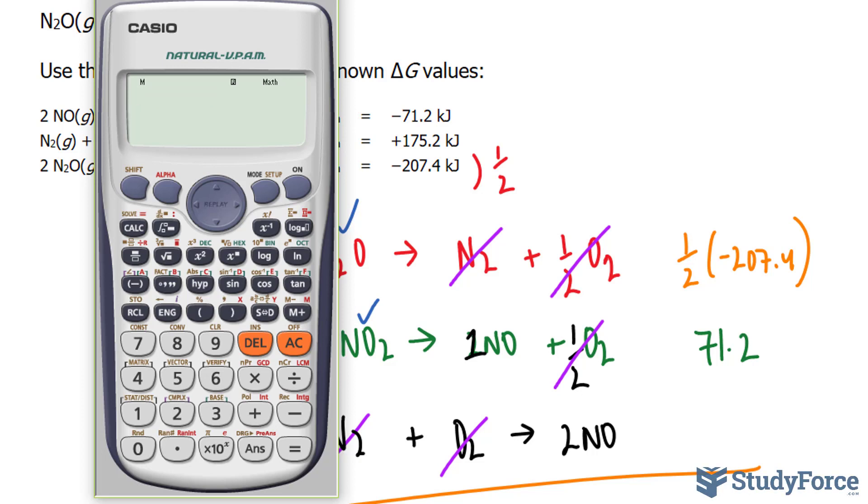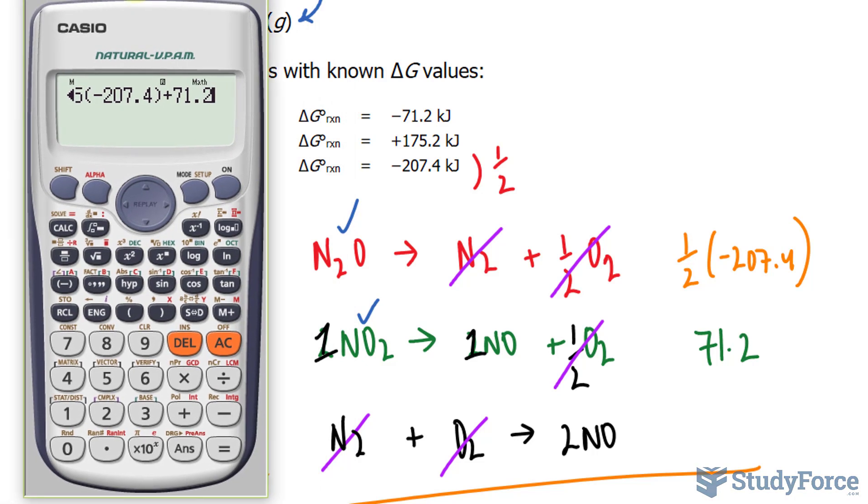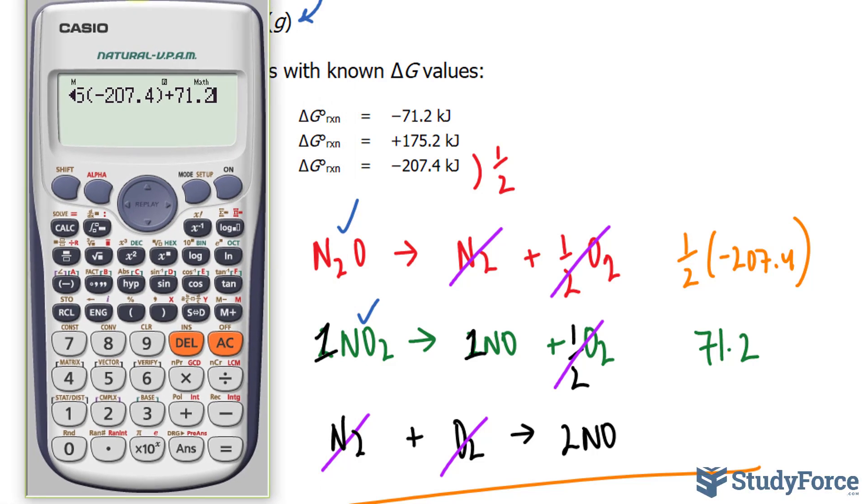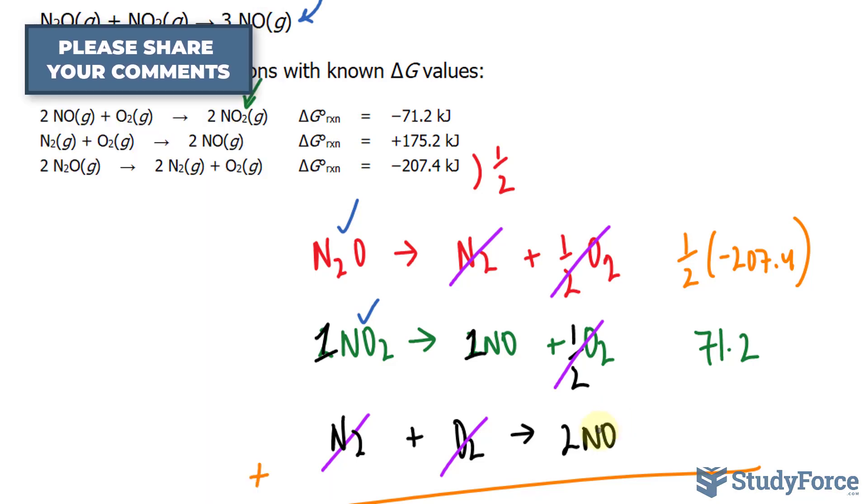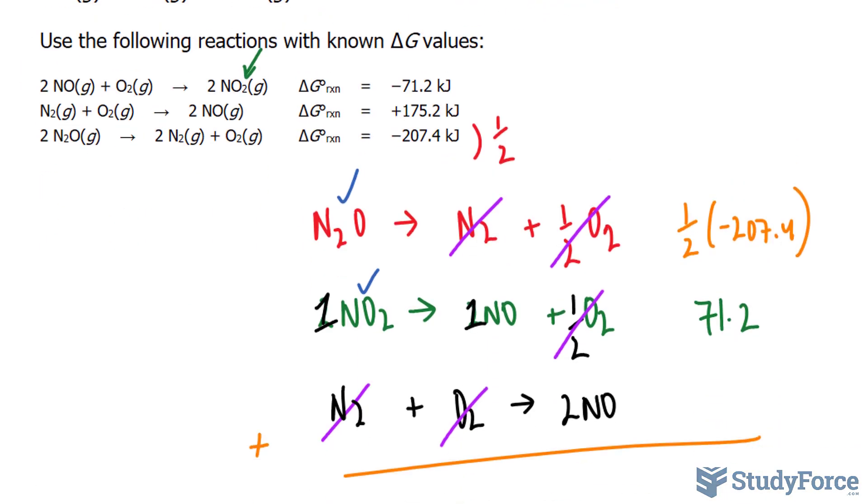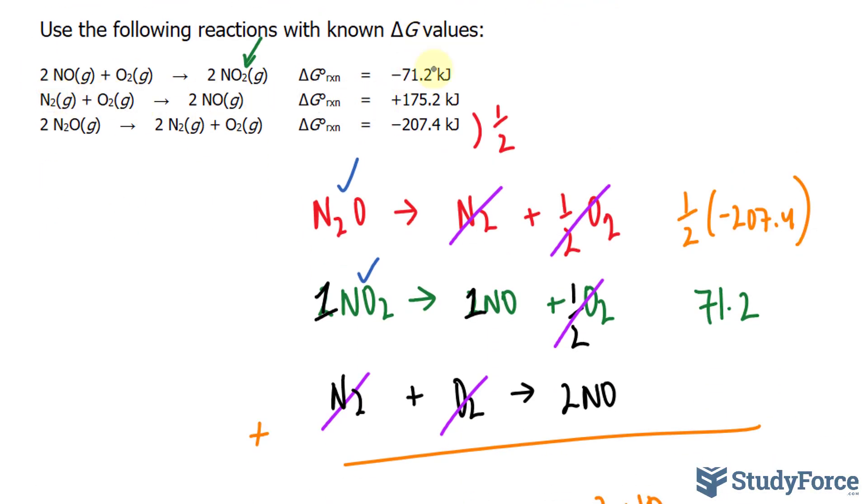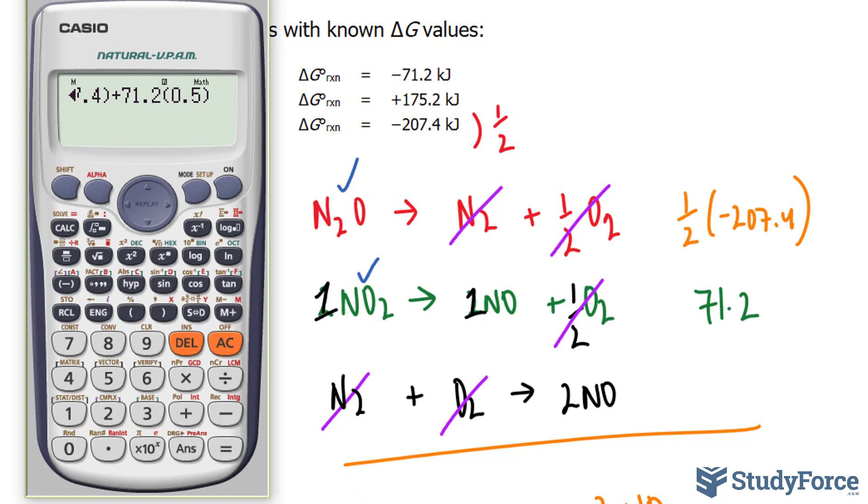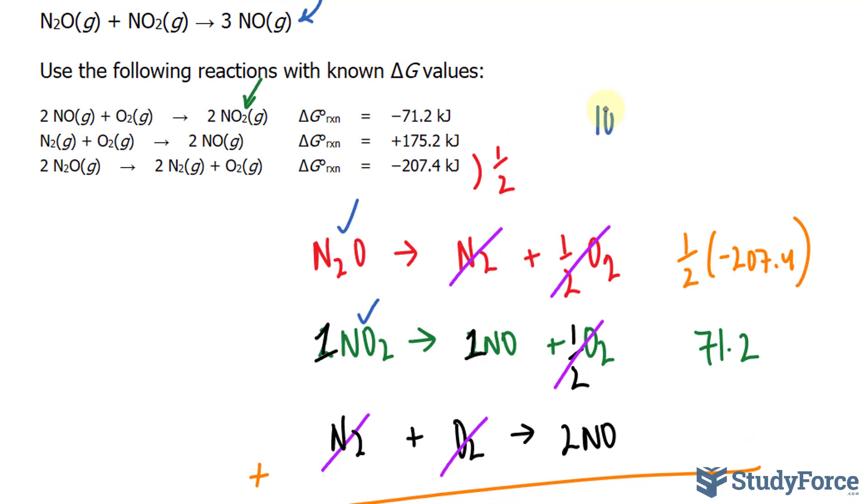Starting over here, we have 0.5 times negative 207.4 plus 71.2. And remember, we also divided by 2 here. So let's multiply this by 0.5, the same thing. And we didn't do anything to this one. Recall that it's the same thing. And its delta G value was 175.2. So I'll add 175.2. This gives us a delta G for this reaction that is positive.